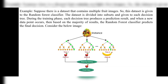Example: Suppose there is a dataset containing multiple fruit images. This dataset is given to the Random Forest classifier, divided into subsets, and each subset is given to an individual decision tree. During training, each decision tree produces a prediction result. When a new data point occurs, the Random Forest classifier predicts the final decision based on the majority of results — in this case, the fruit class.